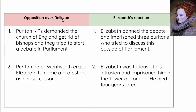There was opposition over religion. Puritan MPs demanded the Church of England get rid of bishops, and they tried to start a debate in Parliament. Elizabeth banned the debate and imprisoned three Puritans who tried to discuss this outside of Parliament.